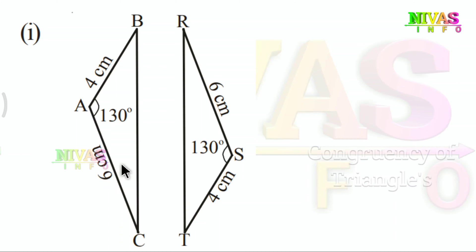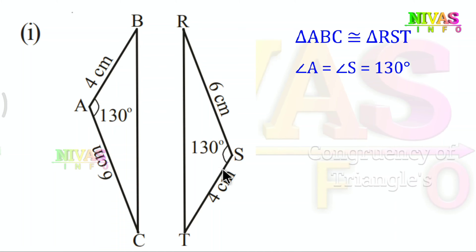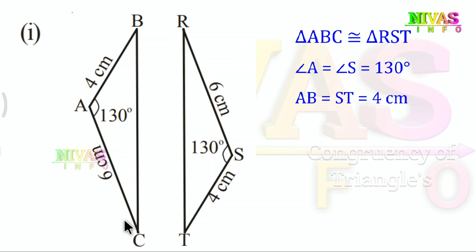These two are congruent. Why are they congruent? The angle of A and the angle of S are equal — both are equal degrees. The two sides are also equal. So here the two sides and one angle satisfy Side, Angle, Side. Therefore these triangles are congruent by the SAS criterion.